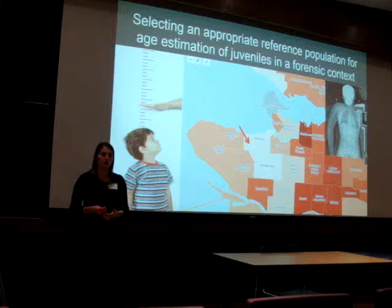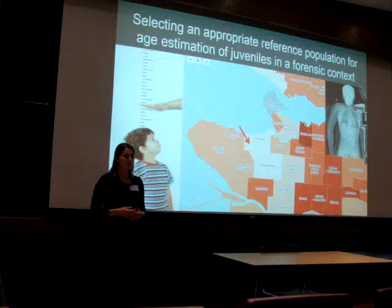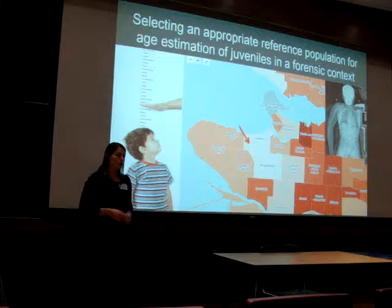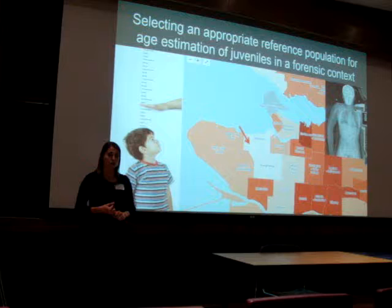Research suggests that children who are victims of child homicide are from a lower socioeconomic background, and that this socioeconomic background leads to higher risks of malnutrition, abuse, and emotional stress. For forensic anthropologists, these words are red flags. We link these words with slower growth and shorter stature.